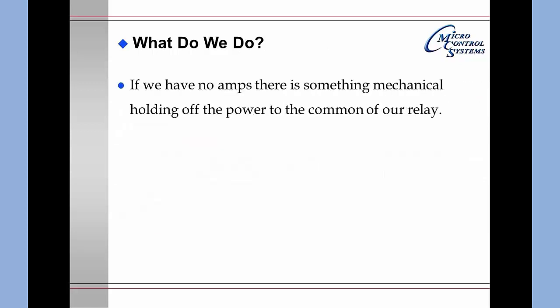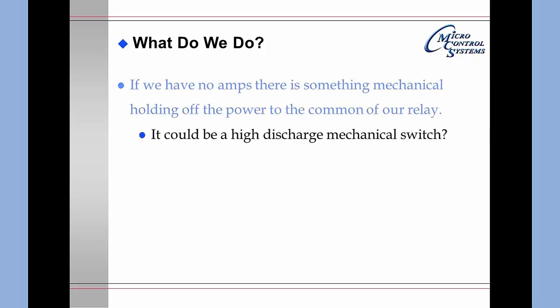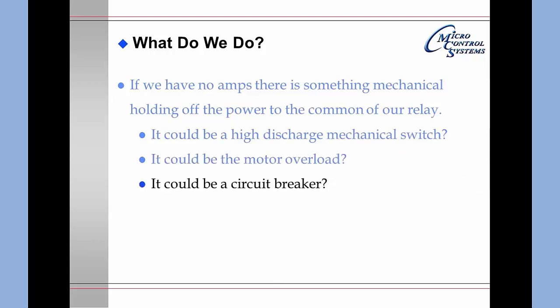So what do we do? If we have no amps, there is something mechanical holding off the power to the common of our relay. It could be a high discharge mechanical switch, the motor overload, or a circuit breaker. You need to go back and pull the wiring diagram to find out what items of a mechanical nature are in front of our relay where the control power is going through before it gets to our relay.